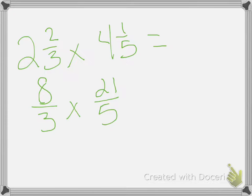Then multiply straight across: eight times twenty-one is one hundred sixty-eight, and three times five is fifteen. So the answer is 168 over 15.